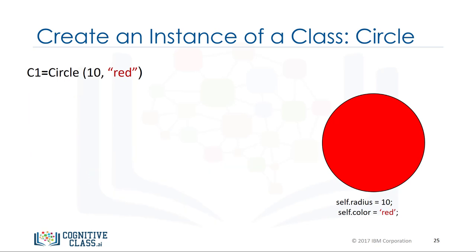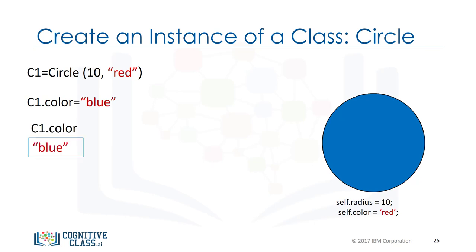In Python we can also set or change the data attribute directly by typing the object's name followed by a dot, the data attribute name, and setting it equal to the corresponding value. We can verify that the color data attribute has changed. Usually in order to change the data in an object we define methods in the class.